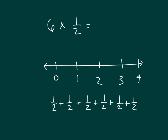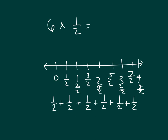How would we show this on our number line? We don't have halves yet, so it's best that we break apart our number line into halves and label them. That'd be 0, 1/2, 2/2, 3/2, 4/2, 5/2, 6/2, 7/2, and 8/2. For 6 times 1/2, we add 1/2 at a time: plus 1/2, plus another half, another half, another half to 4 halves, another half to get to 5 halves, and another half to get to 6 halves, which equals 3. So 6 times 1/2 equals 6 halves, which equals 3.